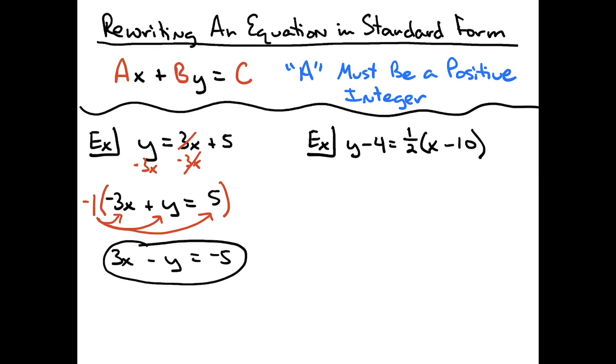Now on the second example, I have been given point slope form, y minus 4 equals 1 half times the quantity x minus 10.